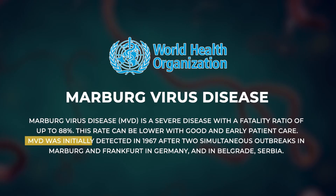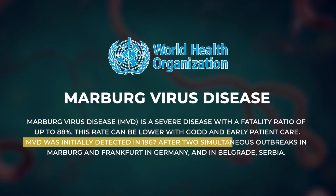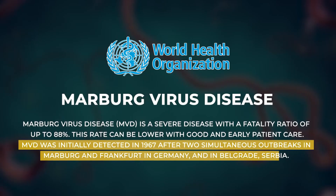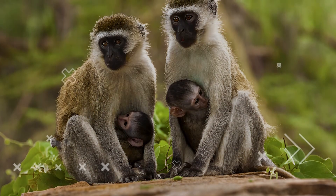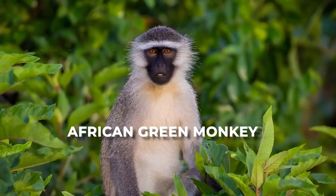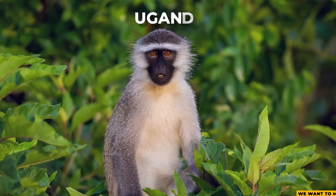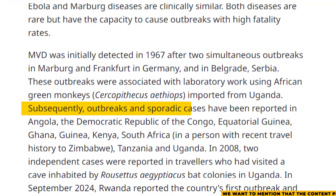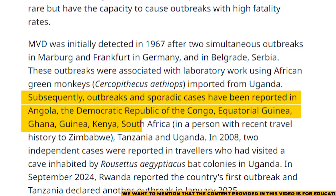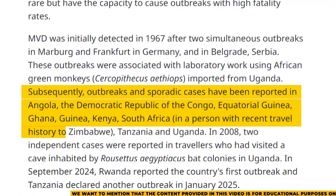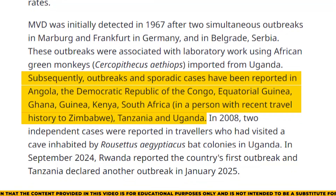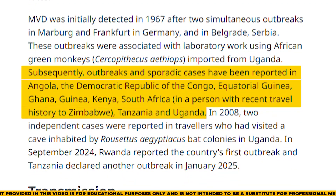Marburg virus was first detected in 1967 after two simultaneous outbreaks in Marburg and Frankfurt in Germany, and in Belgrade, Serbia. These outbreaks were linked to laboratory work with African green monkeys (Cercopithecus aethiops) imported from Uganda. Since then, outbreaks and sporadic cases have been reported in Angola, the Democratic Republic of the Congo, Equatorial Guinea, Ghana, Guinea, Kenya, South Africa, Zimbabwe, Tanzania, and Uganda.